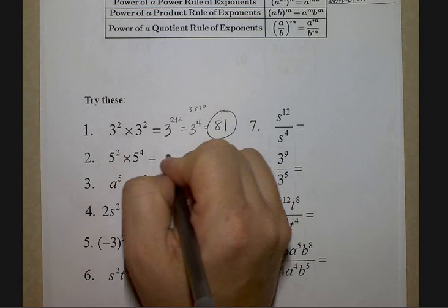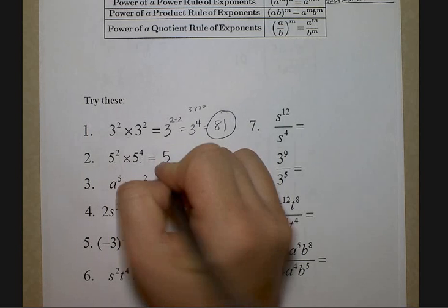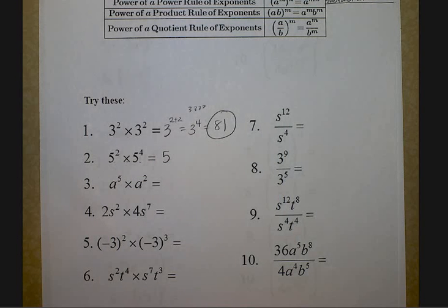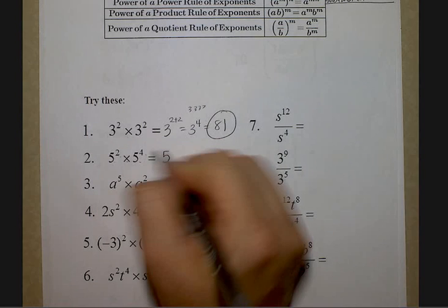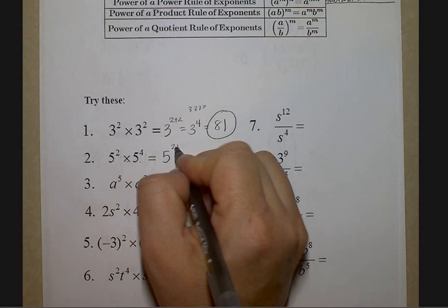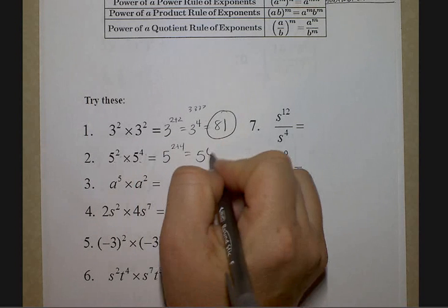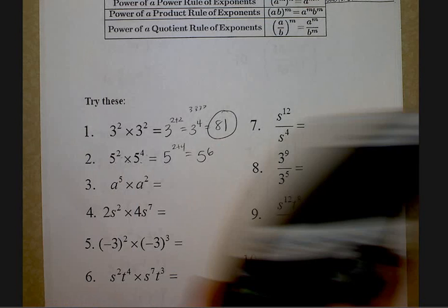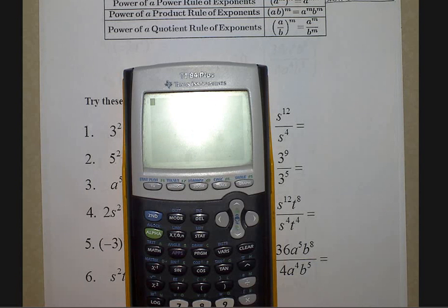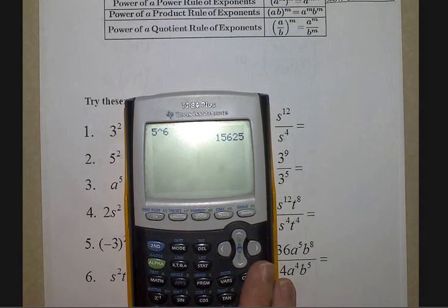Same base and I'm multiplying, so I keep the base the same. The biggest misconception is people think it's going to be a 25 — five is the base, keep the base the same. You're going to add the exponents: two plus four is six. I don't know offhand what five to the sixth is, so five to the sixth power is 15,625.